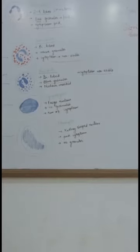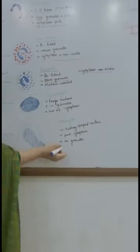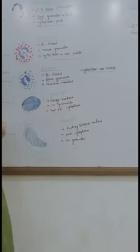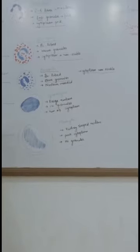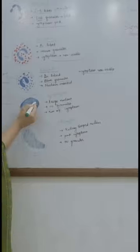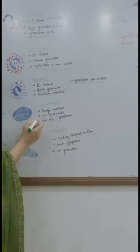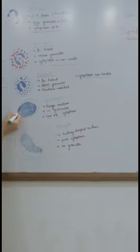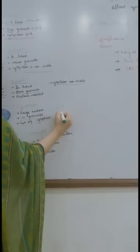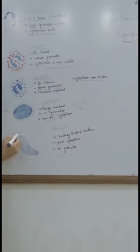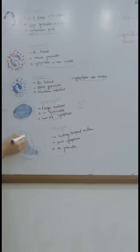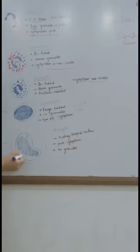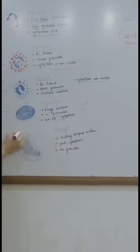Now the agranulocytes — again, no granules. Monocytes have no granules, and lymphocytes have no granules. Lymphocytes basically have a single large nucleus which is blue, and there is just a rim of cytoplasm around it — the nucleus covers almost two-thirds of the cell. Monocytes have a kidney-shaped nucleus, which is all blue, and the cytoplasm is pink in colour.